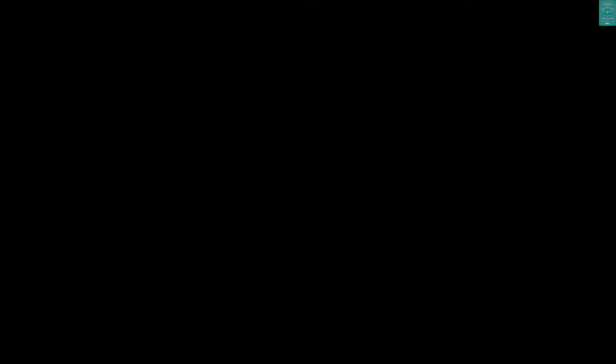Now, how am I going to use this? I'm going to take this equation and look at the variables that drive the P/E ratio. Three very basic propositions emerge. Proposition one: all else remaining equal, the higher the growth rate, the higher the P/E ratio. Higher growth companies should have higher P/E ratios. Proposition two: all else remaining equal, higher risk companies should have lower P/E ratios.